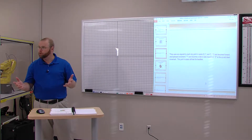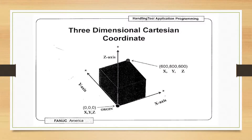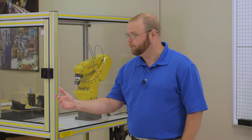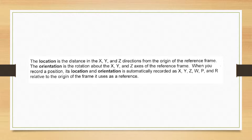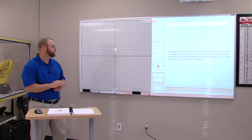This point in space defines the location. There's an example of a three-dimensional coordinate system. Not only do we have our X and Y coordinates, but we also have Z. We don't live in a 2D world, we live in a 3D world. Location is defined as the distance in X, Y, and Z directions from the origin of the reference frame, and the orientation is the rotation about the X, Y, and Z axis of the reference frame.